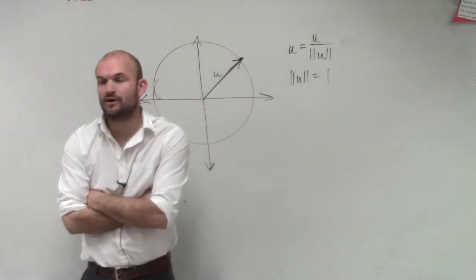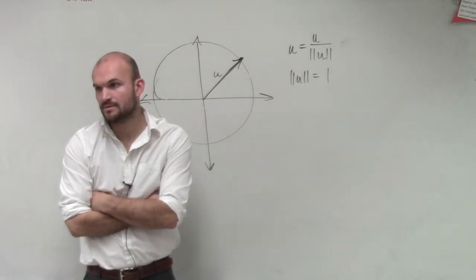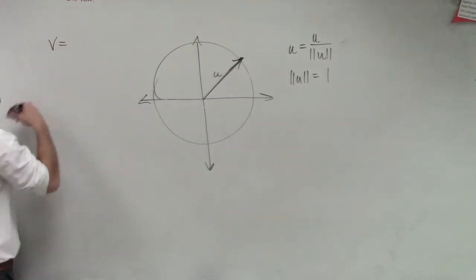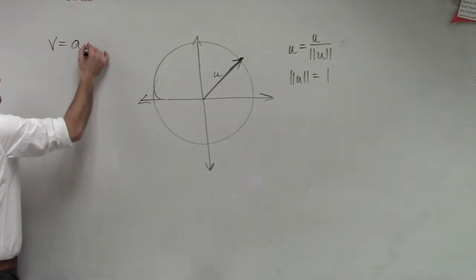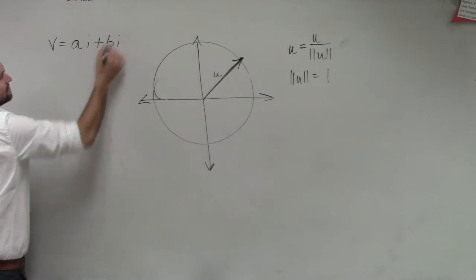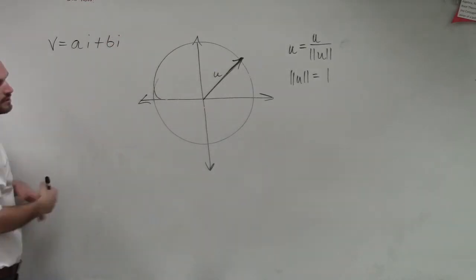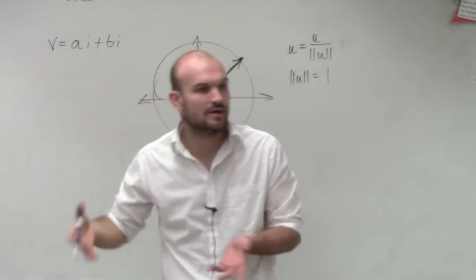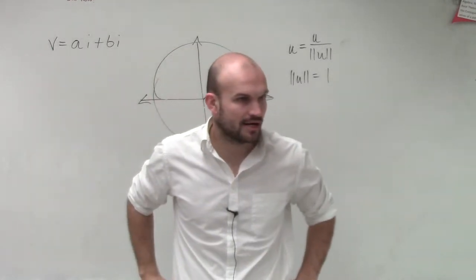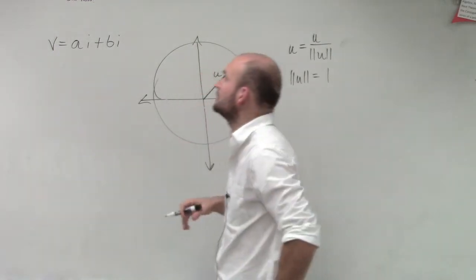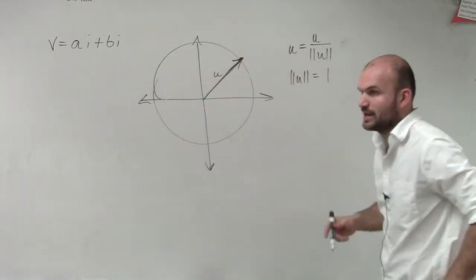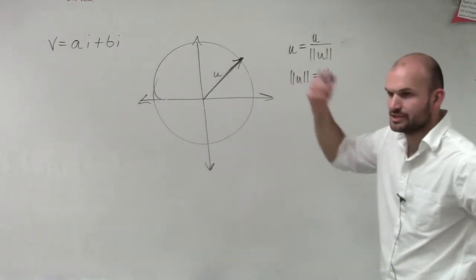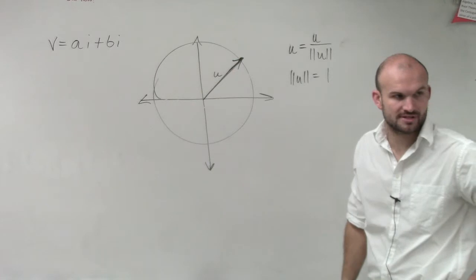Now let's say we want to find out a vector V. So we have a vector V. We're going to write V as a linear combination, A i plus B j, where A and B are your scalars. Just like V1 and V2, we're going to use A and B. Now let's go ahead and take a look at what we would do with this. First of all, let's go back to the unit circle, and this is why it's going to be very important for us to understand.